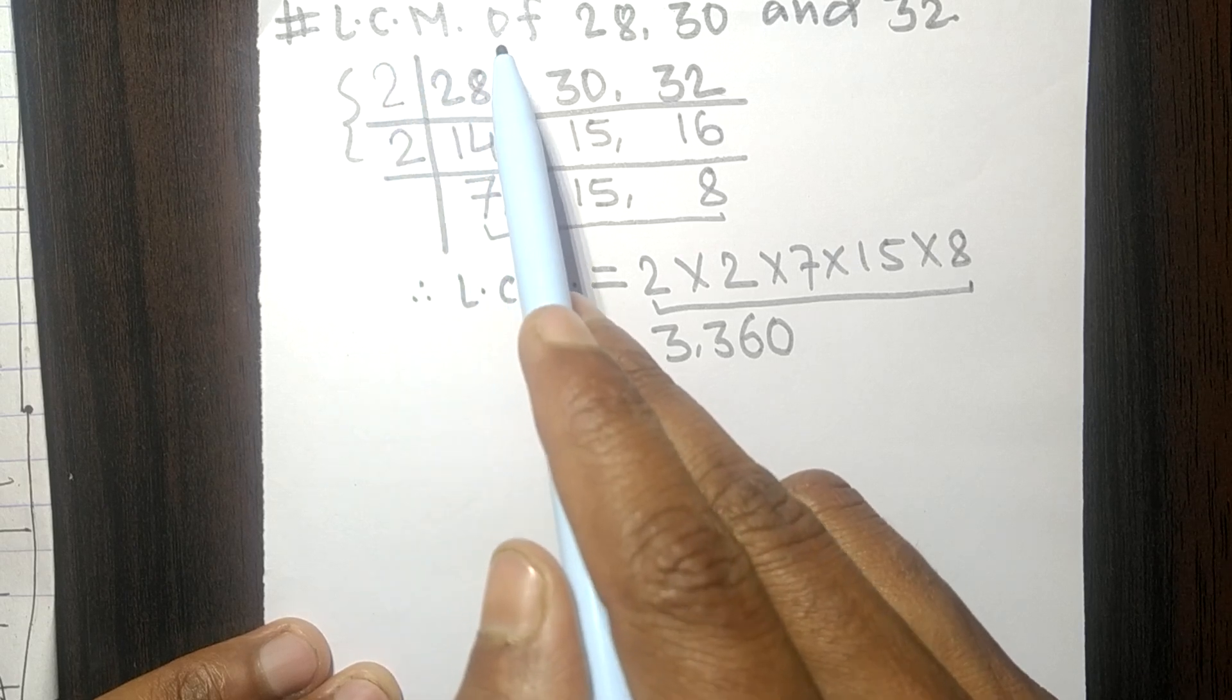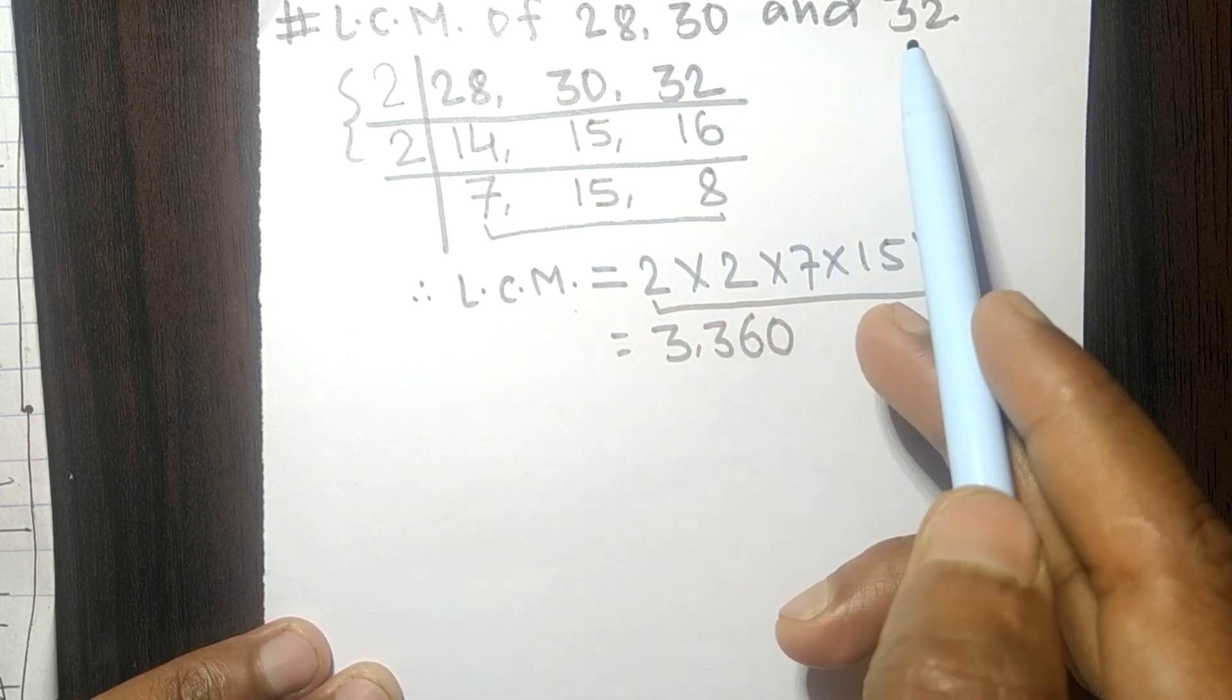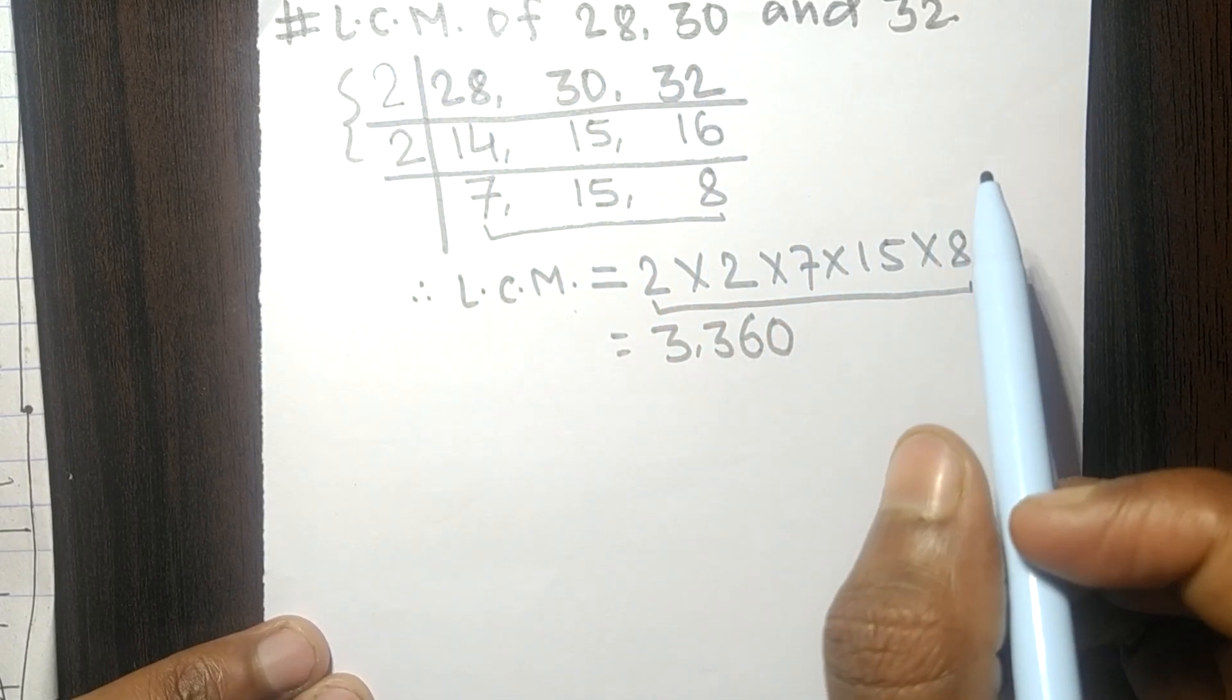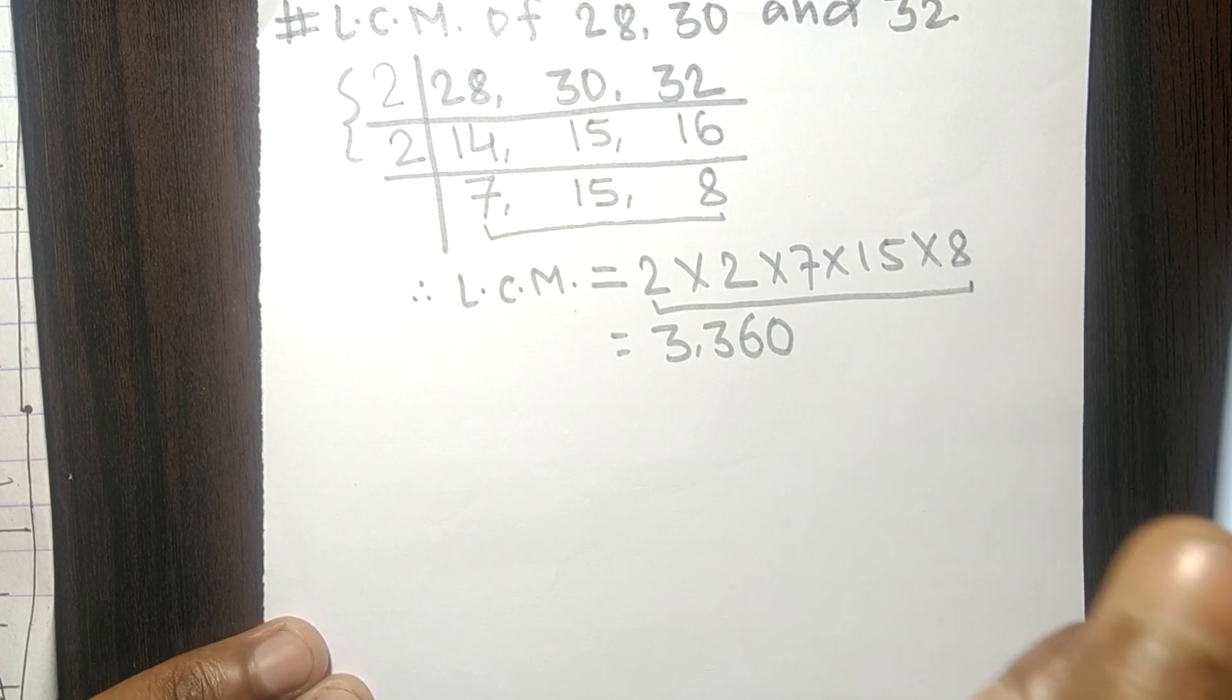So 3360 is the LCM of 28, 30 and 32. So this much for today and thanks for watching.